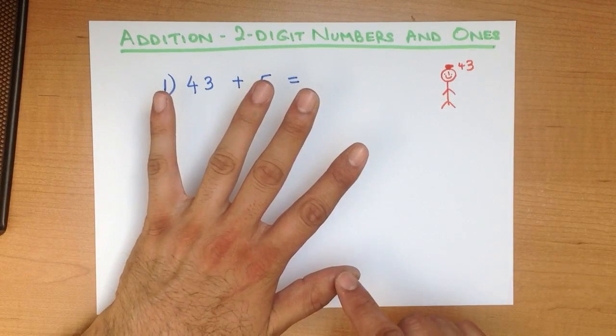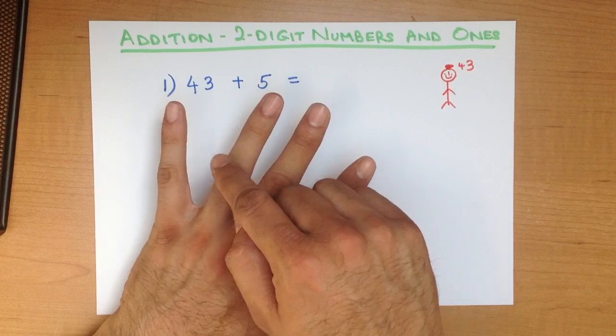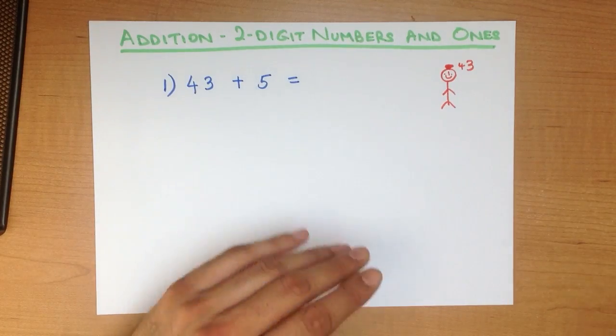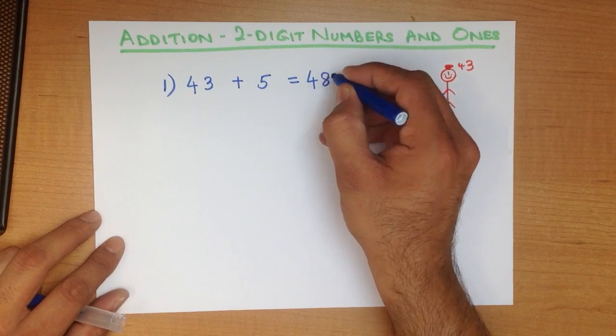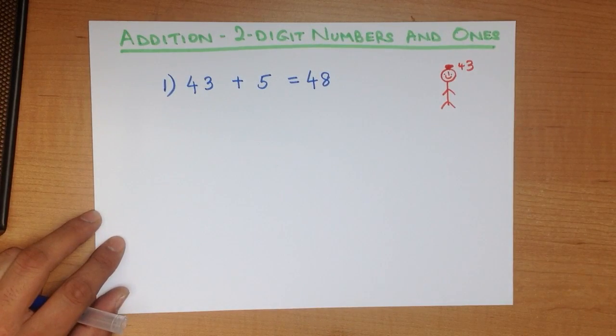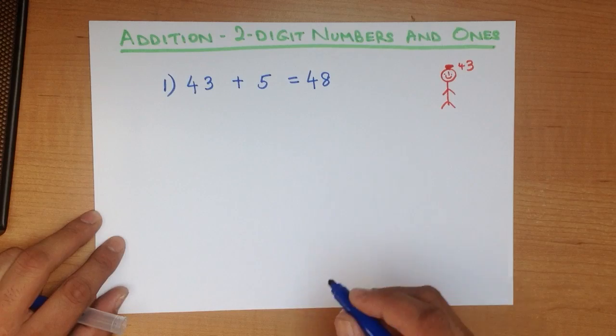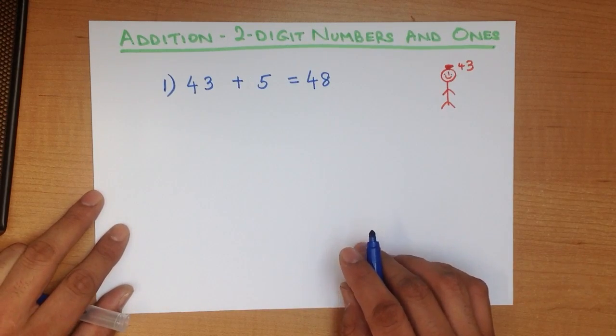43, 44, 45, 46, 47, 48. And that is our answer. 43 plus 5 is 48. Do you see how simple that was using the head and fingers method?